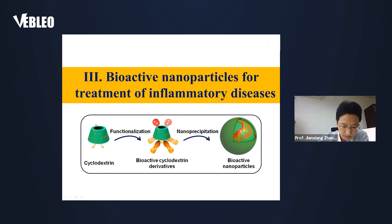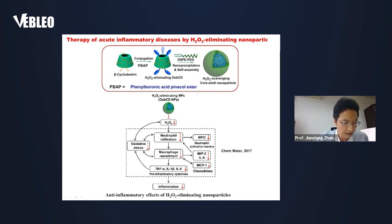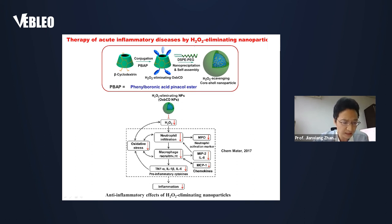In the third section, I will briefly introduce some of our studies on bi-active nanoparticles for treatment of inflammatory diseases. The related research was inspired by one of our previous studies, in which we found that PBAP-conjugated cyclodextrin material displayed anti-inflammatory effects, mainly by eliminating hydrogen peroxide, inhibiting neutrophil infiltration and macrophage recruitment, as well as reducing expressions of pro-inflammatory cytokines and oxidative mediators.